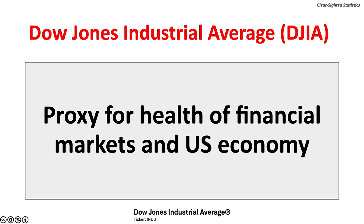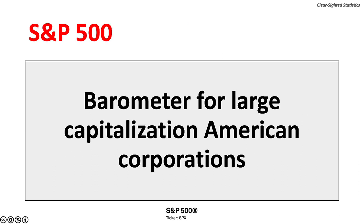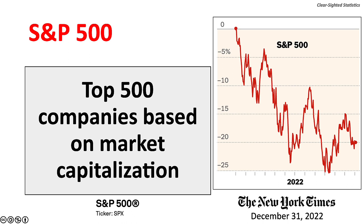The Dow Jones Industrial Average is considered a proxy for the health of financial markets and the American economy. The Standard & Poor's 500 is a barometer of the strength of large capitalization corporations, including the top 500 companies based on market capitalization. As shown in a chart published in the New York Times on December 31, 2022, that year was a terrible year for the S&P 500.